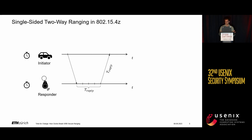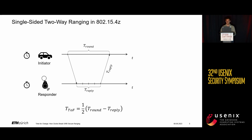The reply time can simply be transmitted to the initiator. All the initiator has to do is measure the round-trip time, and it then has all the information necessary to compute the time of flight by applying the formula: deducting the reply time from the round-trip time and dividing the difference by two. All that remains is the time of flight the signal needed to propagate between the devices.